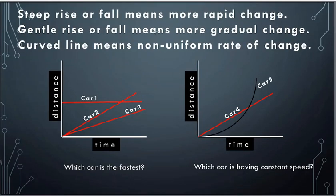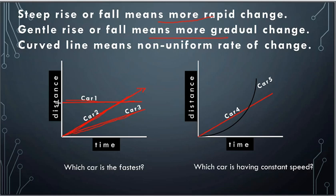A steep rise or fall means a more rapid change, and a gentle rise or fall means a more gradual change. Here we have two lines — car 2 and car 3. Car 2 is faster because it shows a steep rise, while car 3 shows a gentle rise. Car 1 has no rise or fall at all, so it is at rest. When a graph shows a straight line it means uniform velocity, and when it shows a curve it means changing or non-uniform velocity.